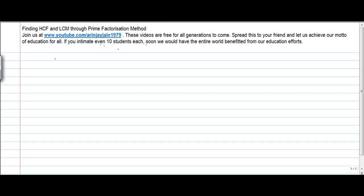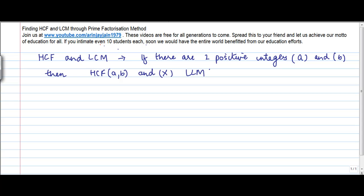Let us see another property of HCF or highest common factor and LCM. This property says that if there are two positive integers a and b, then HCF of a,b multiplied by LCM of a,b is equal to a times b.